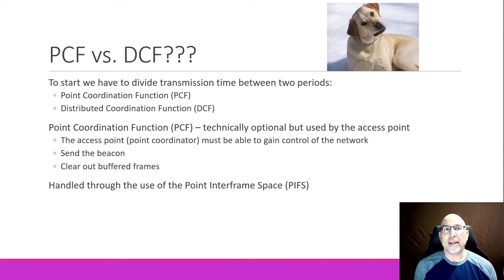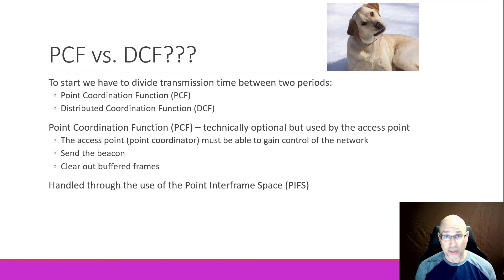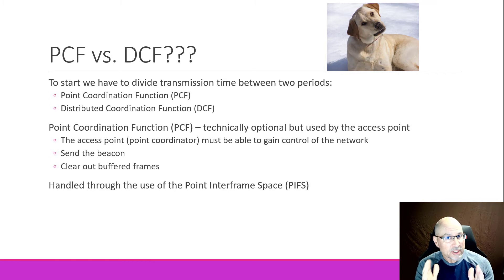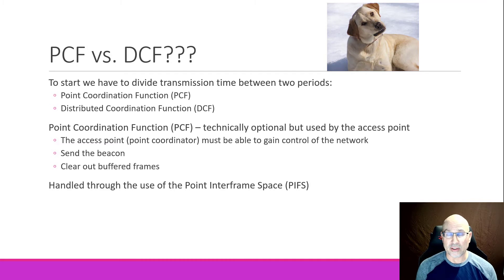How does the access point get control over the media? Wireless networks are controlled by timing, and there is something called the inter-frame space — actually, there's a bunch of them. The access point uses a Point Inter-Frame Space, or PIFS, which is shorter than some of the other inter-frame spaces. Because of the shorter inter-frame space, the access point doesn't have to wait as long, and so it can get its stuff done.